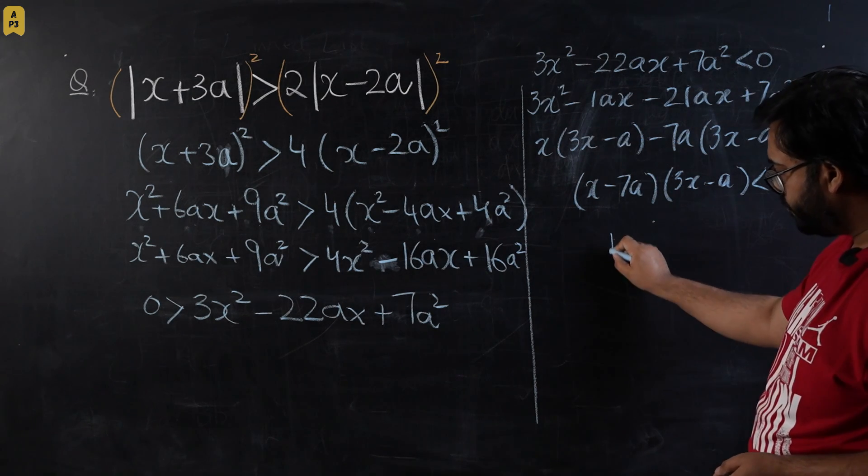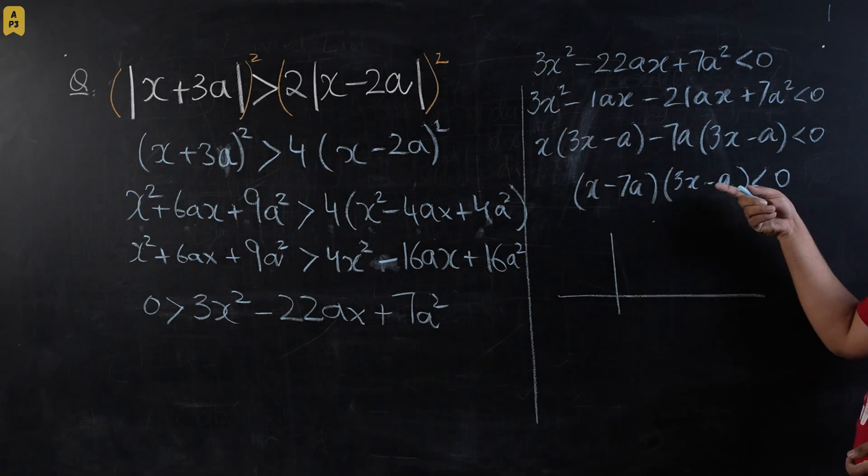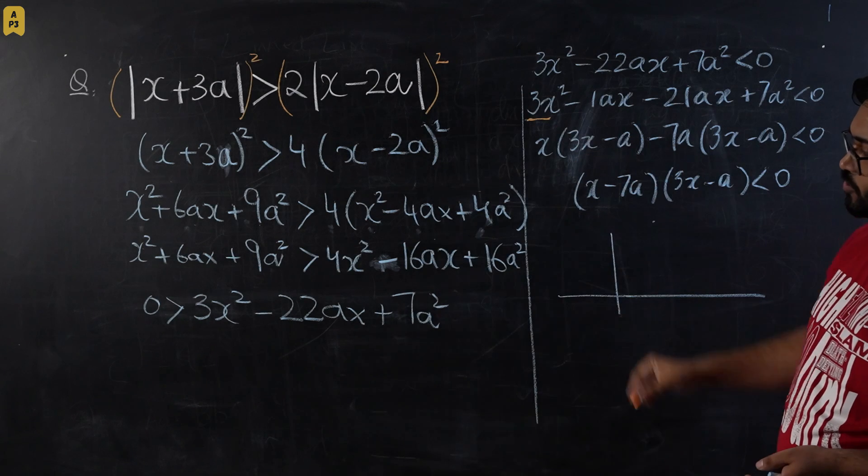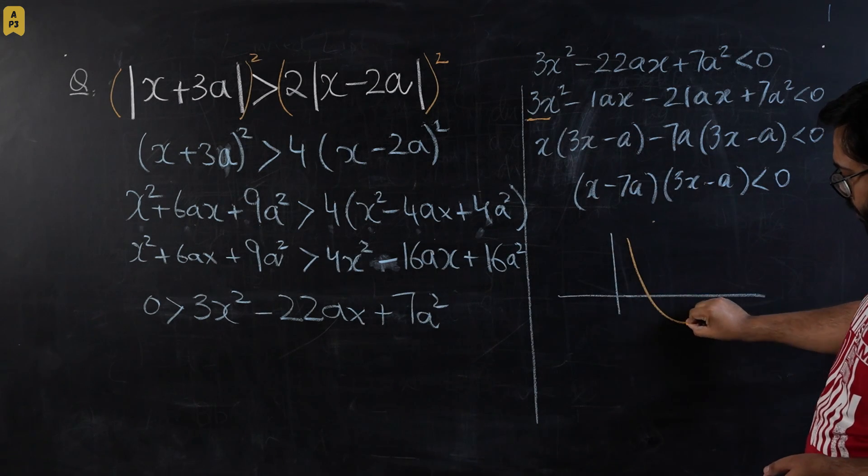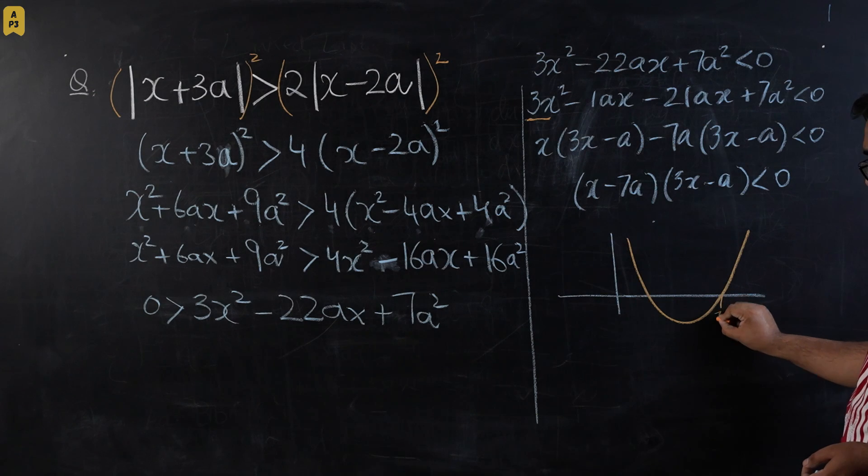We're going to have two x-intercepts. This is going to be 7a, this is a/3. It's a smiley shape graph because x² is positive, so I'm going to draw a graph which is a positive quadratic curve. So this is 7a and this is a/3.